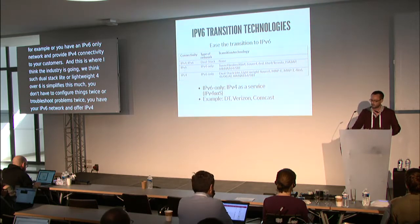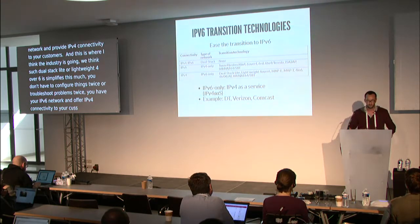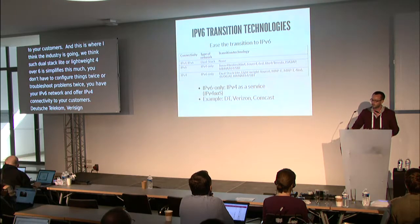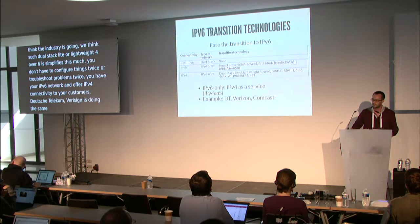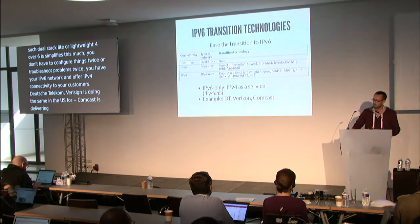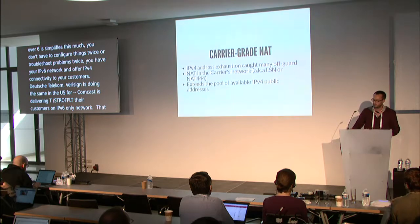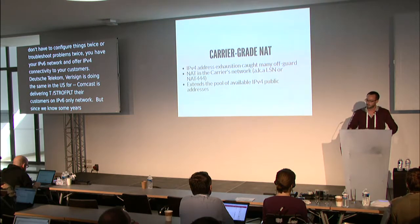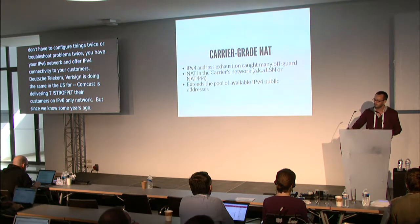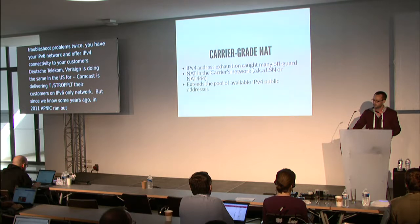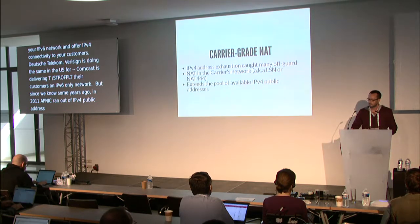For example, Deutsche Telekom TerraStream, Verizon — in the US the 4G mobile network is IPv6-only. Comcast is delivering TV to their customers on an IPv6-only network. Since around 2011, APNIC ran out of IPv4 public addresses and then the other registries followed. So ISPs needed to accommodate higher customer demand with the same pool of IPv4 addresses.